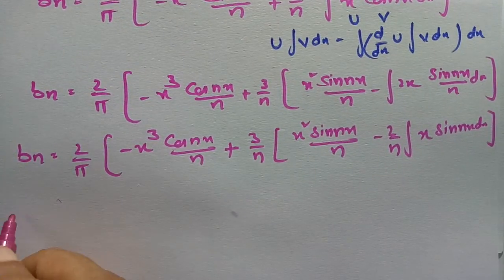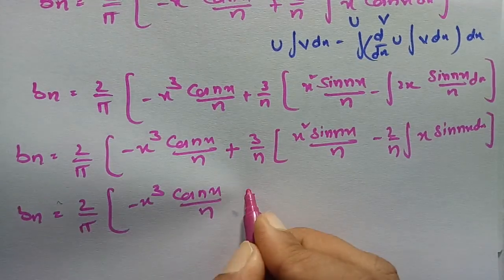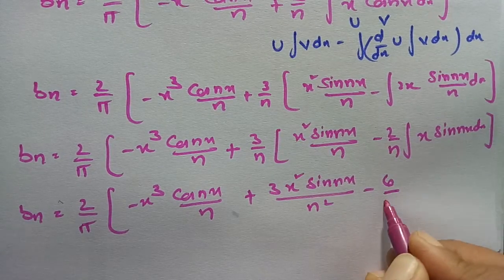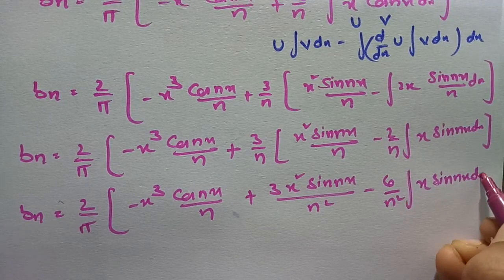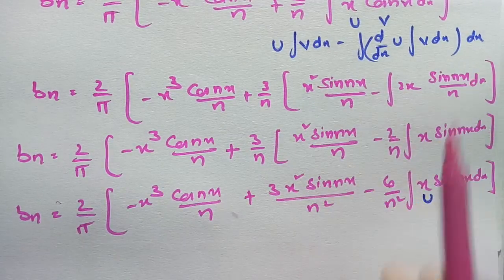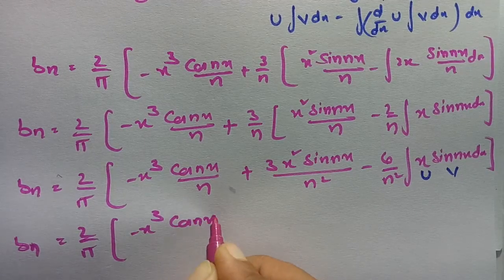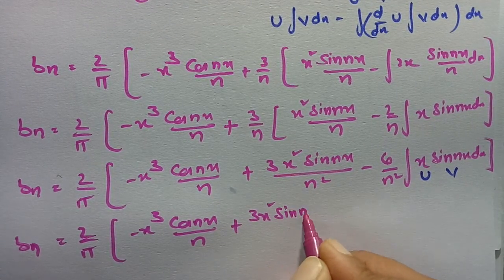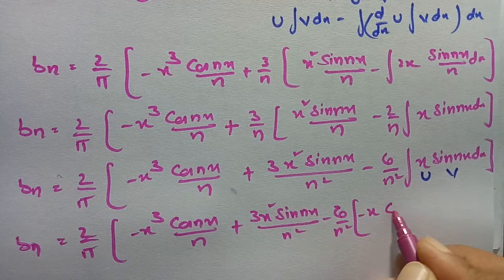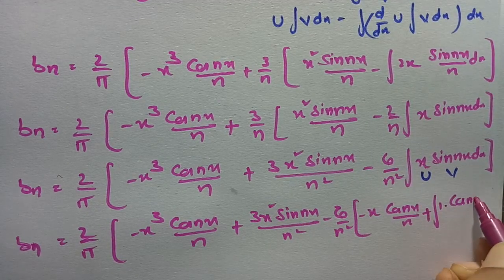Multiplying through by 3/n, the expression becomes: bₙ = (2/π)[ −x³ cos(nx)/n + 3x² sin(nx)/n² − (6/n²) ∫ x sin(nx) dx ]. Applying IBP once more to ∫ x sin(nx) dx with u = x and v = sin(nx): bₙ = (2/π)[ −x³ cos(nx)/n + 3x² sin(nx)/n² − (6/n²)( x·(−cos(nx)/n) − ∫ (1)·cos(nx)/n dx ) ].